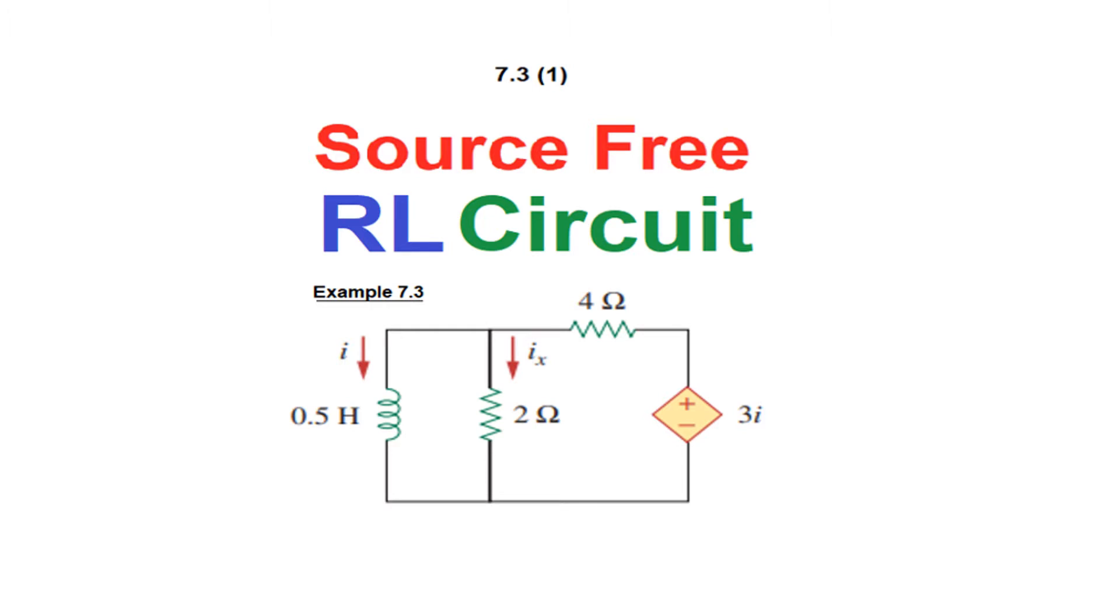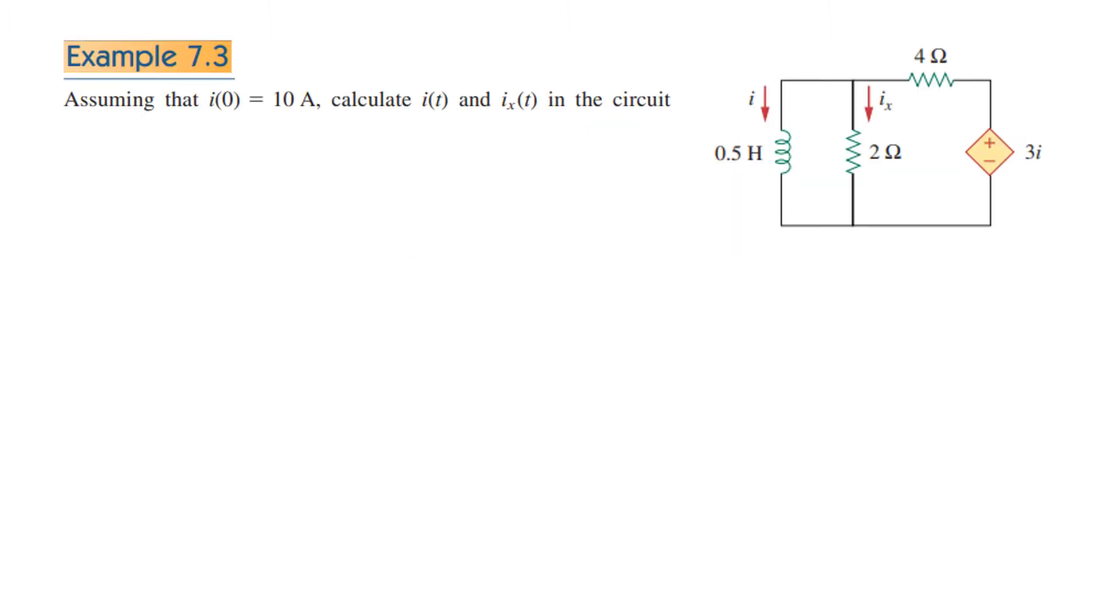So let's go to the question directly. Example 7.3: Assuming that I₀ is 10 amperes, calculate I(t) and Iₓ(t) in the circuit. This is the current through the inductor and this resistor is Iₓ.